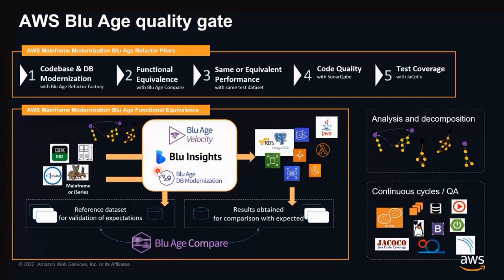The fifth pillar is test coverage. This is an indicator we always monitor all along the transformation process and the validation strategy, so we can control the quality of the data sets and the scenarios we receive as input and that we execute as output. I'll use that last point to develop how we prove functional equivalence and validate the result of the transformation.